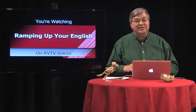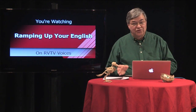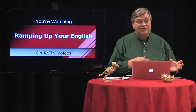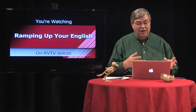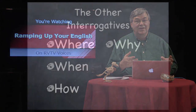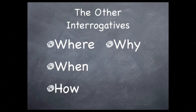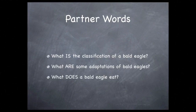Now, we've already seen what the word who refers to — a person, a group of people, or even a character. Let's look at the other interrogatives on the list. We still haven't talked about the interrogatives where, when, how, and why. Now, these are less general than the word what, and it's important to know what kind of information they relate to. Let's keep going down the list of the interrogatives, starting with where.